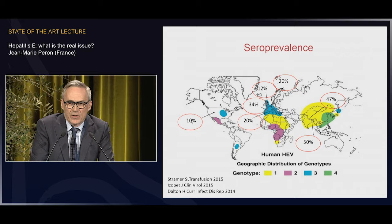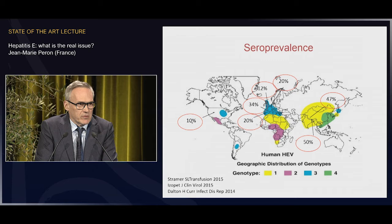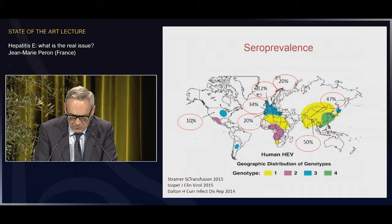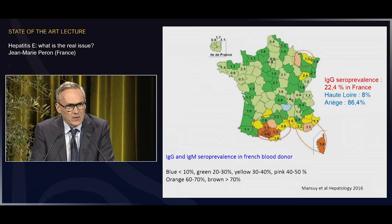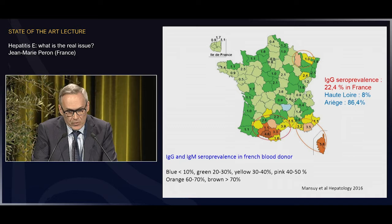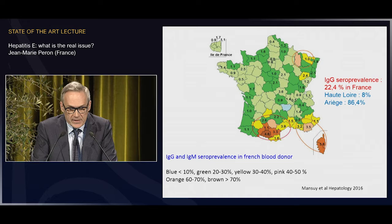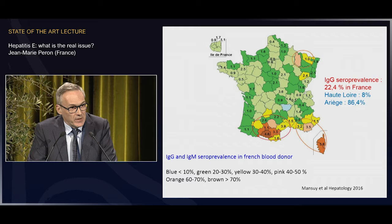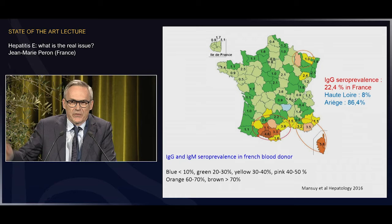Seroprevalence of hepatitis E varies widely worldwide — around 12% in some places, up to 50% in Nepal and Tibet. In France, overall seroprevalence is around 22%, which is fairly high. But within France, some regions are under 8% in blood donors, while in Ariège, seroprevalence is around 80%. So there are areas where almost everybody has been in contact with hepatitis E, with many asymptomatic cases.